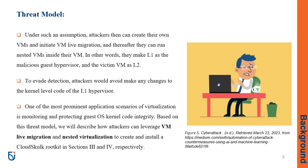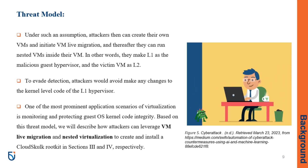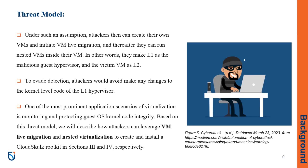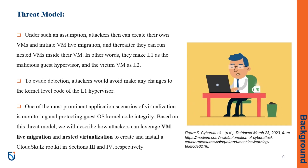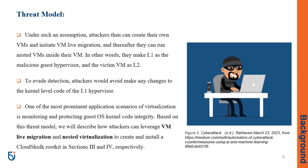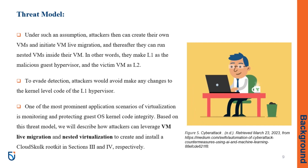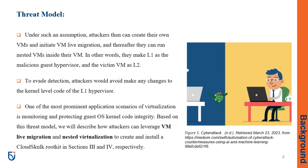They can do this by creating their own virtual machines and using VM live migration to move them around. They would make their own hypervisor, L1, act as the malicious guest hypervisor and put the victim's virtual machine, L2, inside it. This way, they can run even more virtual machines inside L2, making it even harder to detect. To make sure they don't get caught, they'll avoid making any changes to the L1 hypervisor's kernel-level code. Virtualization is often used to monitor and protect the integrity of guest operating system kernel code, but in this scenario, attackers are using it to create and install a CloudSkulk rootkit, which we'll explain more about in sections 3 and 4.